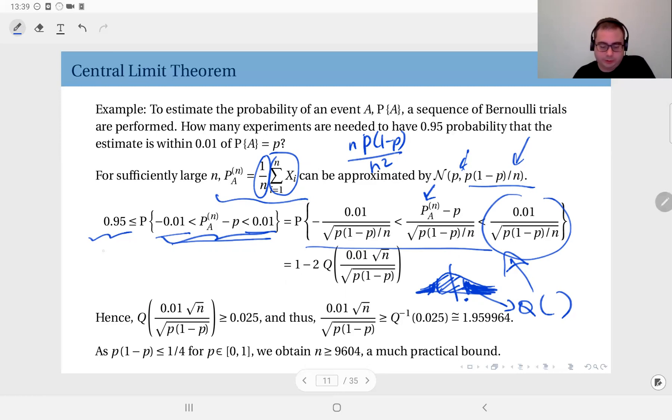So the inequality here, 0.95 is less than or equal to this value here, so I have this inequality. And therefore if I invert the Q function, and it's a decreasing function, so the inequality changes direction and this is obtained.